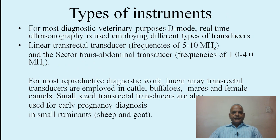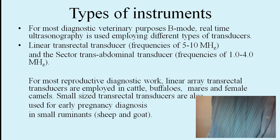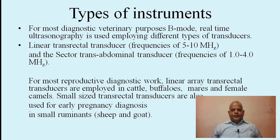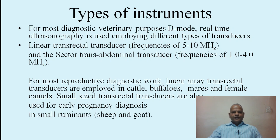For most diagnostic veterinary purposes, B-mode real-time ultrasonography is used, employing different types of transducers: the linear transrectal transducer with frequencies of 5 to 10 MHz, and the sector transabdominal transducer with frequencies of 1 to 4 MHz. For most reproductive diagnostic work, linear array transrectal transducers are employed in cattle, buffaloes, mares, and female camels.